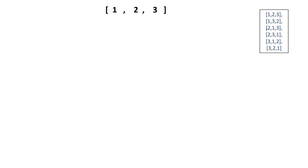First, what will be the first digit? If you observe, 2 permutations start with 1, 2 start with 2, and 2 start with 3. So initially our choice will be either 1, 2, or 3 — any one of them. Let's say we choose 1 as the first character, meaning that position is fixed. Then the choices left for us are 2 and 3.